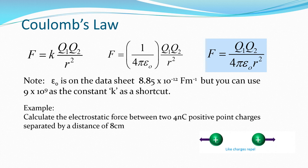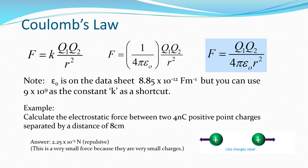Remember, like charges repel, so the force is going to be outwards. Your answer should have been 2.25 times 10 to the negative 5 newtons. This is a very, very small force because they are very, very small charges — just like in a gravitational field, where the gravitational force attracting you to another mass is generally very small because your mass is small.